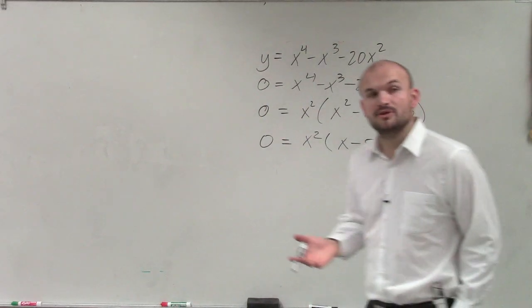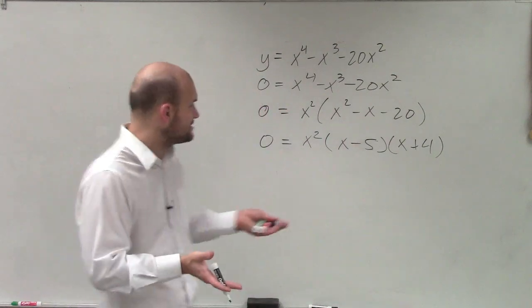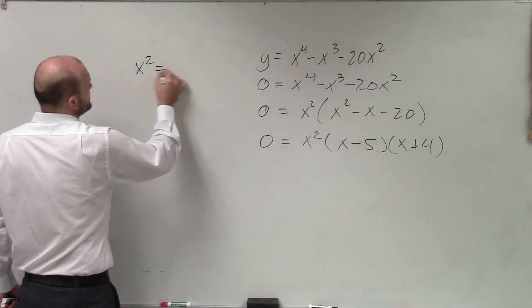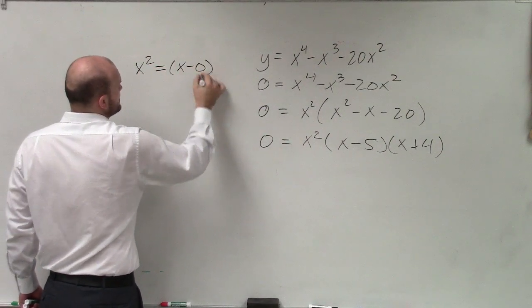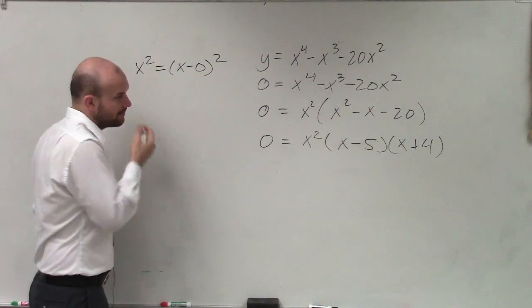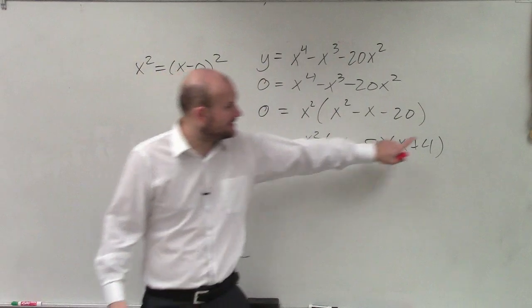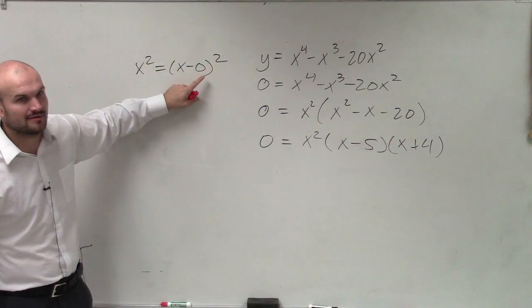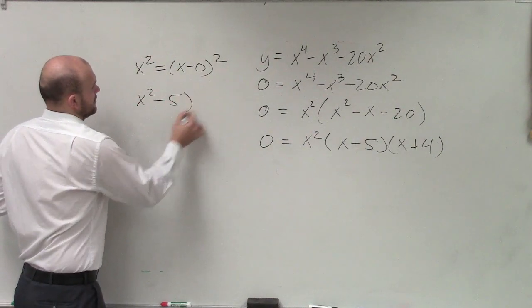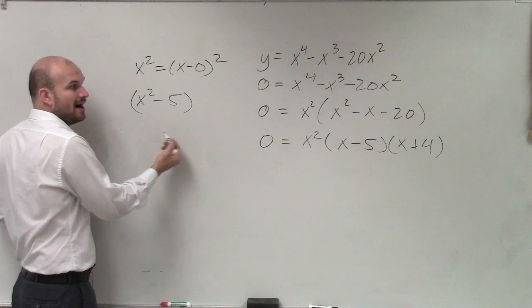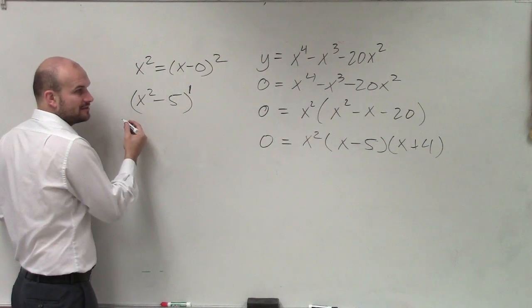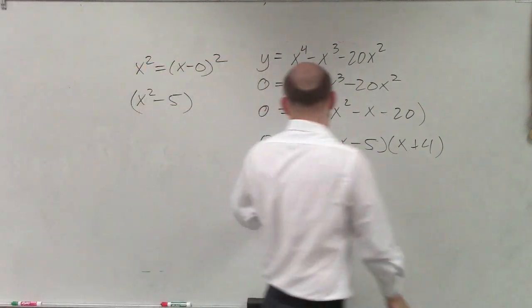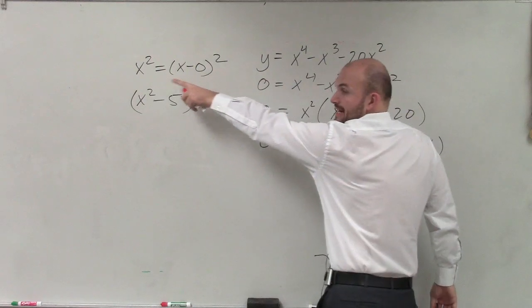When determining multiplicity, we don't look at what the zero is, but at the factor. Remember, x² is the same as (x - 0)². To determine multiplicity, we look at the exponent of each factor. A lot of students think about the numbers - this has multiplicity 1 because there's a 1 outside the factor, not inside it.